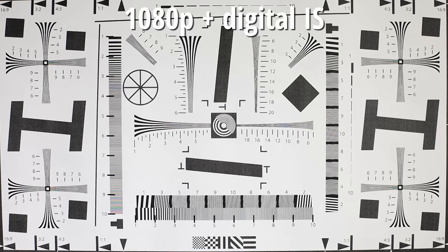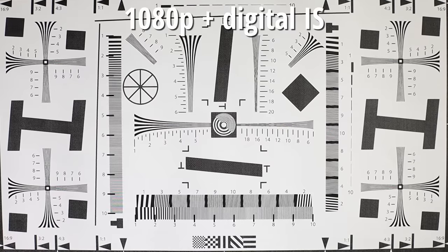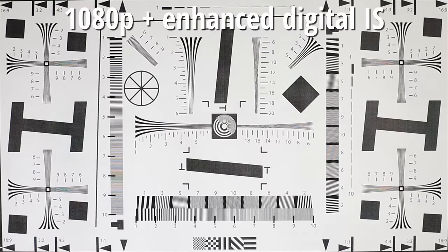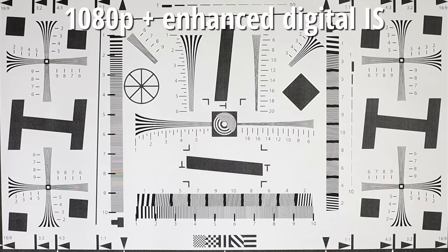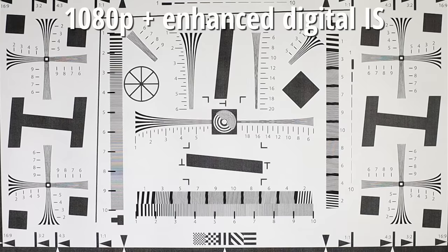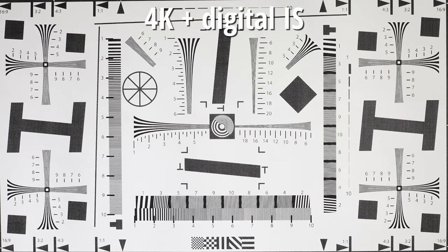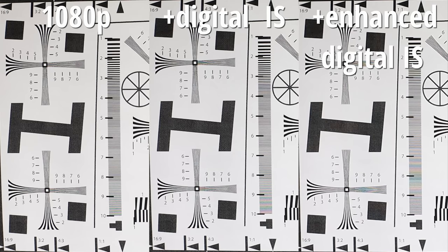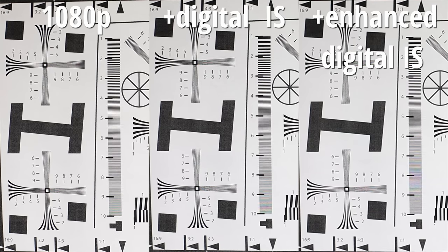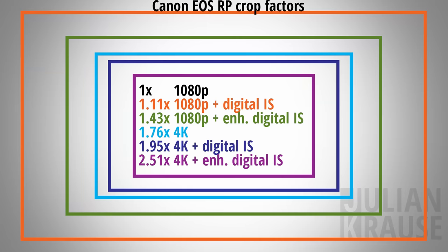Let me quickly show you the image when digital stabilization is activated. The digital stabilization crops the image slightly and I compensated for that by moving back the camera. In full HD the digital stabilizer softens up the image a bit and introduces even more moire. There is also an enhanced mode which has an even tighter crop — in full HD this results in a very soft image with a huge amount of moire. In 4K the digital IS softens the image slightly and in the enhanced mode it decreases image detail even further. I personally wouldn't use the digital stabilizing options of the EOS RP, especially in full HD. And in 4K the additional crop on top of the already heavy 4K crop is simply too much.